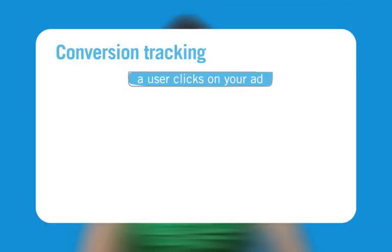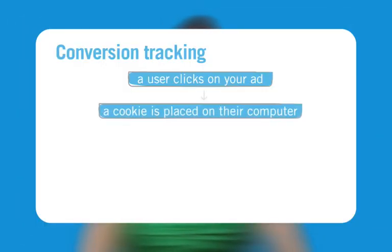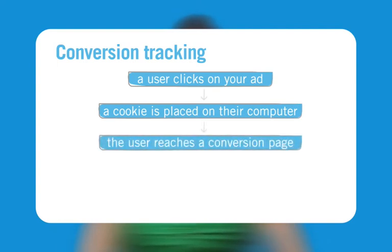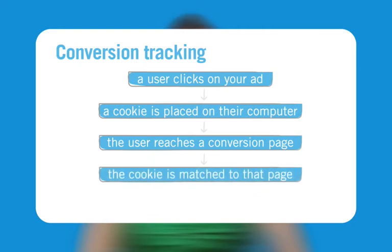Conversion tracking works like this. When a user clicks one of your AdWords ads, a cookie is placed on their computer. Then if the user reaches one of your conversion pages, the cookie is connected to your webpage.